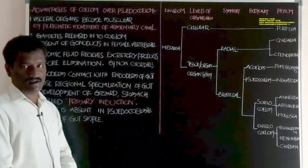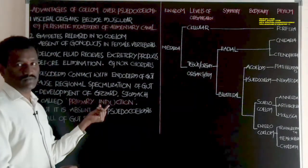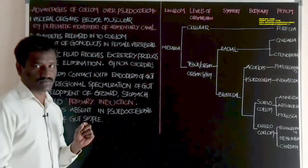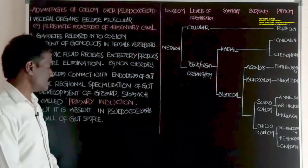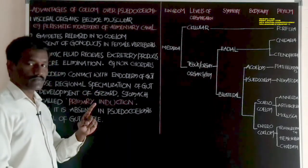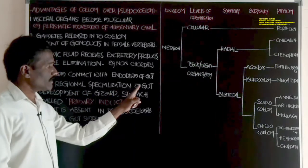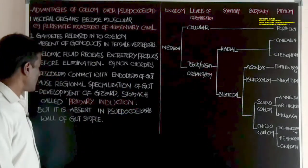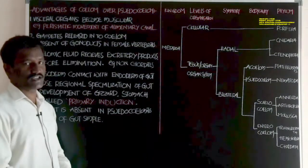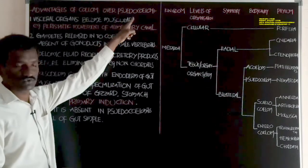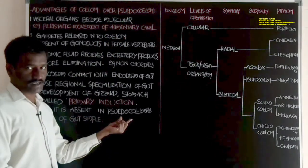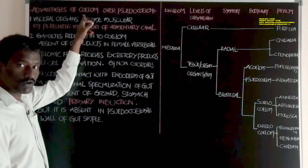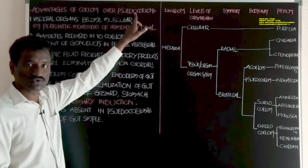In the development of the coelom, this causes primary induction. Primary induction means it is the first development that causes further developments — further specializations. The appearance of the gizzard and stomach in the food tube are called primary induction. Such type of primary induction and specializations are absent in animals which show pseudo-coelom. These specializations are absent in pseudocoelomates.